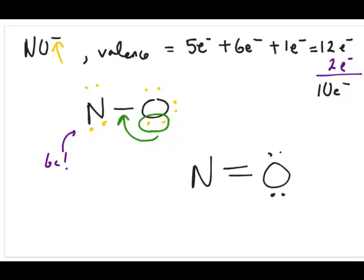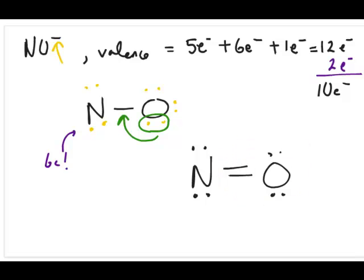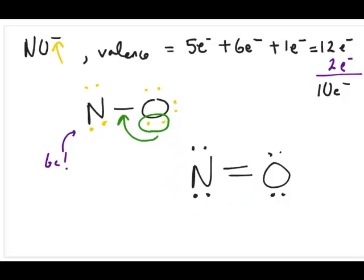The final structure has eight electrons around the nitrogen, confirming it has an octet, and the oxygen also has an octet. To complete the drawing, put the structure in brackets with the negative sign on the outside.